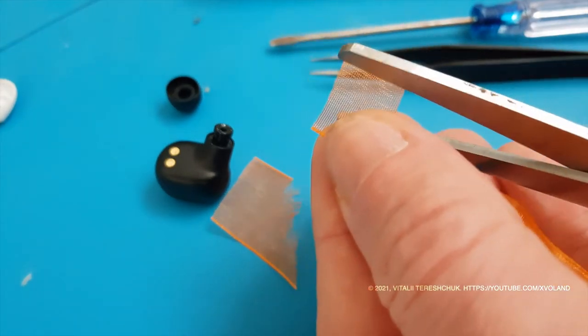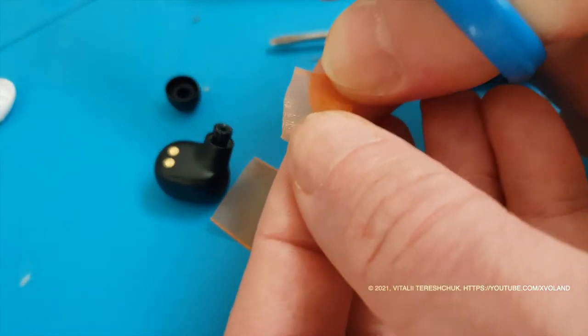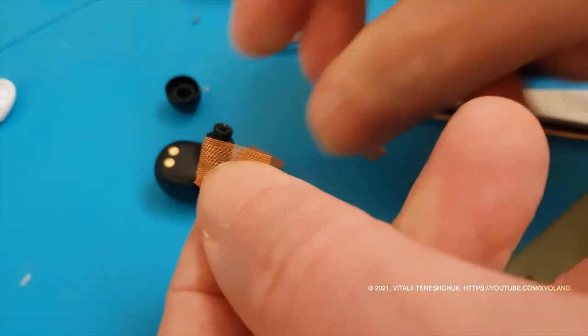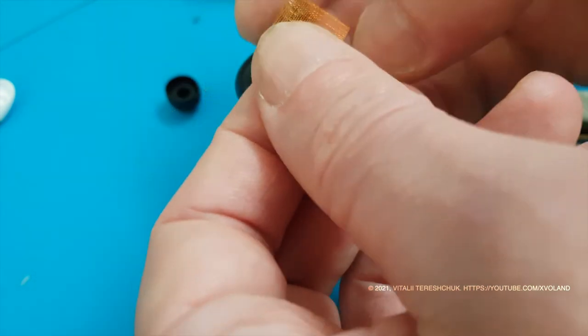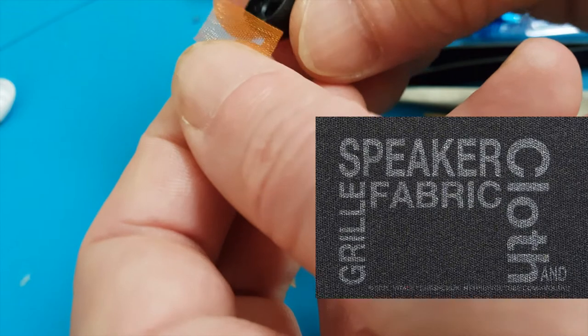Next step to replace the mesh grid I use a candy gift ribbon. This tape consists of synthetic fibers, so it is not afraid of water. You can also use fabric for speakers, which you can buy in special audio shops or use old speakers.